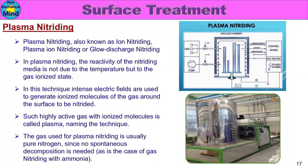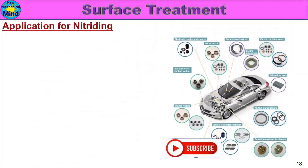The gas used for plasma nitriding is usually pure nitrogen, since no spontaneous decomposition is needed — as is the case with gas nitriding using ammonia, where the ammonia gas dissociates into nitrogen and hydrogen.